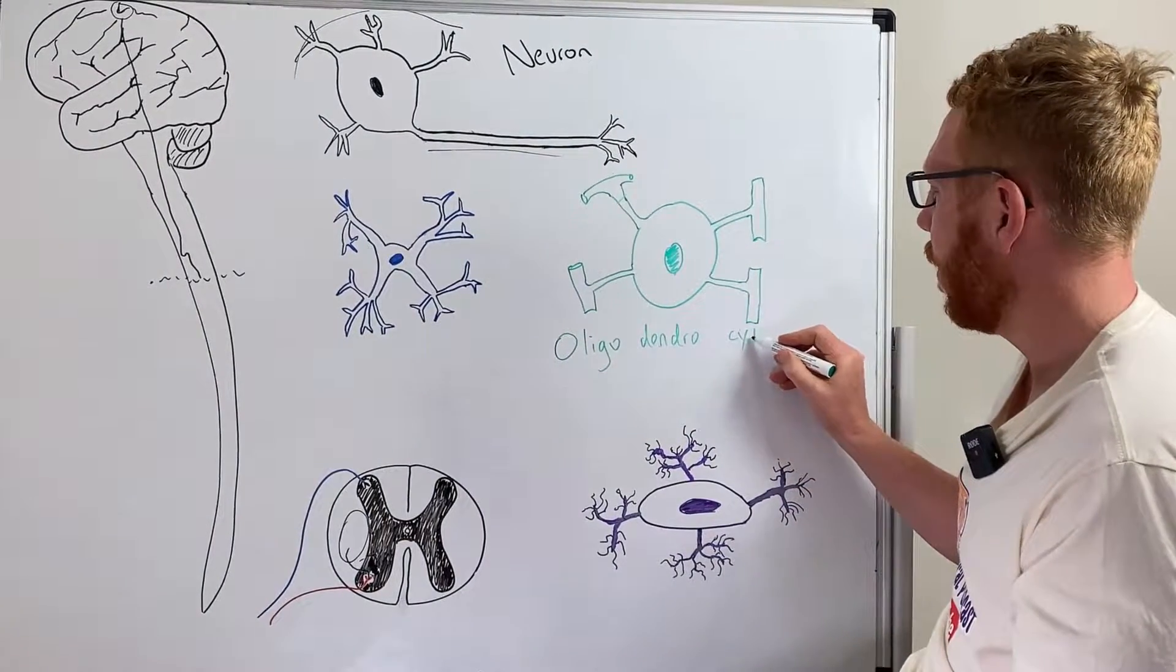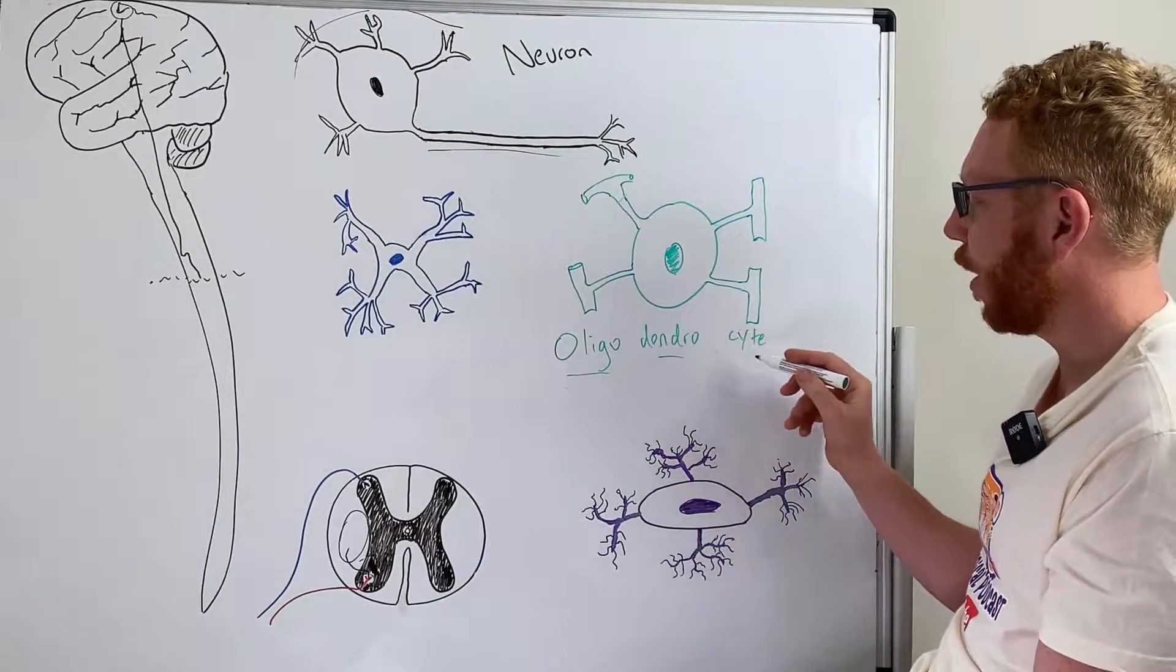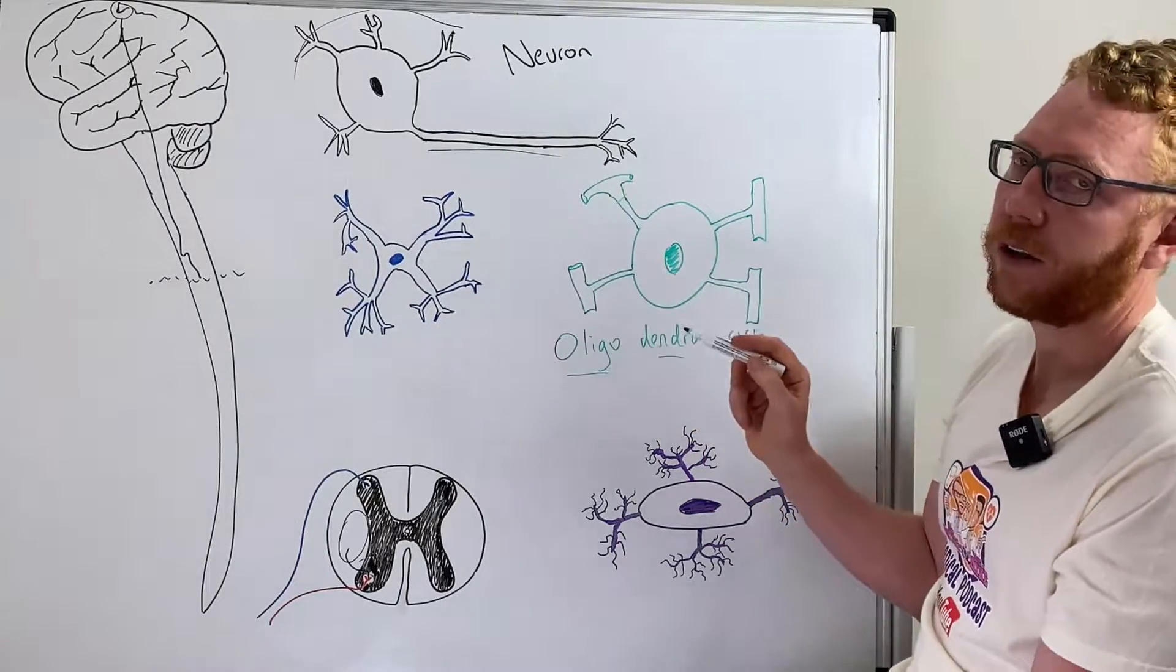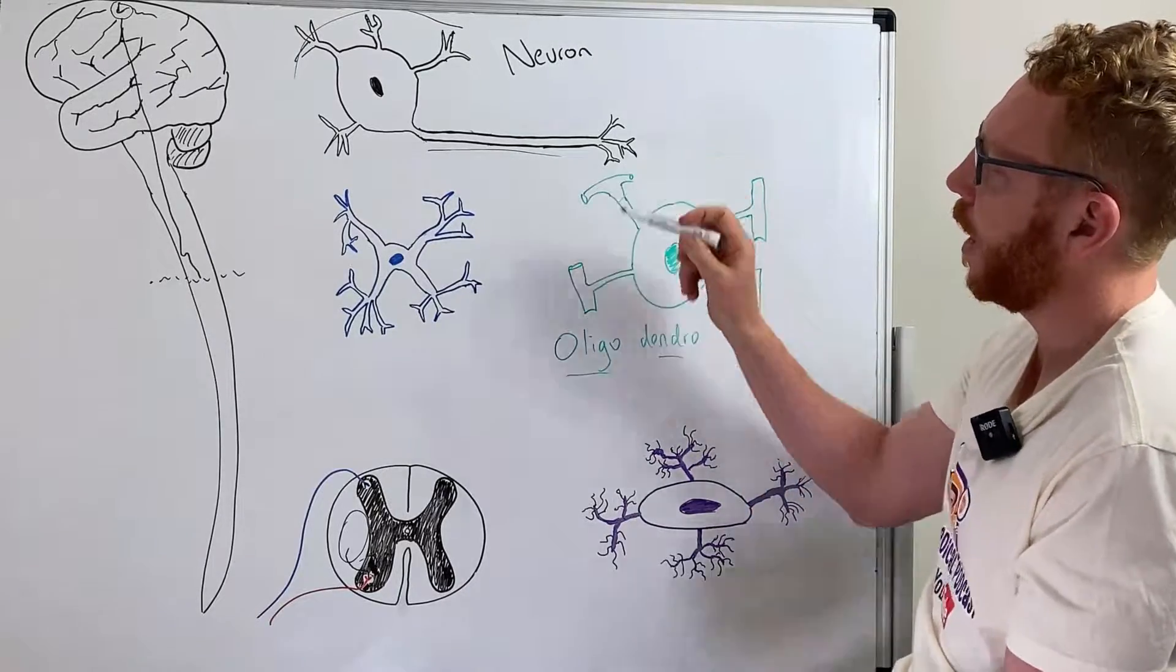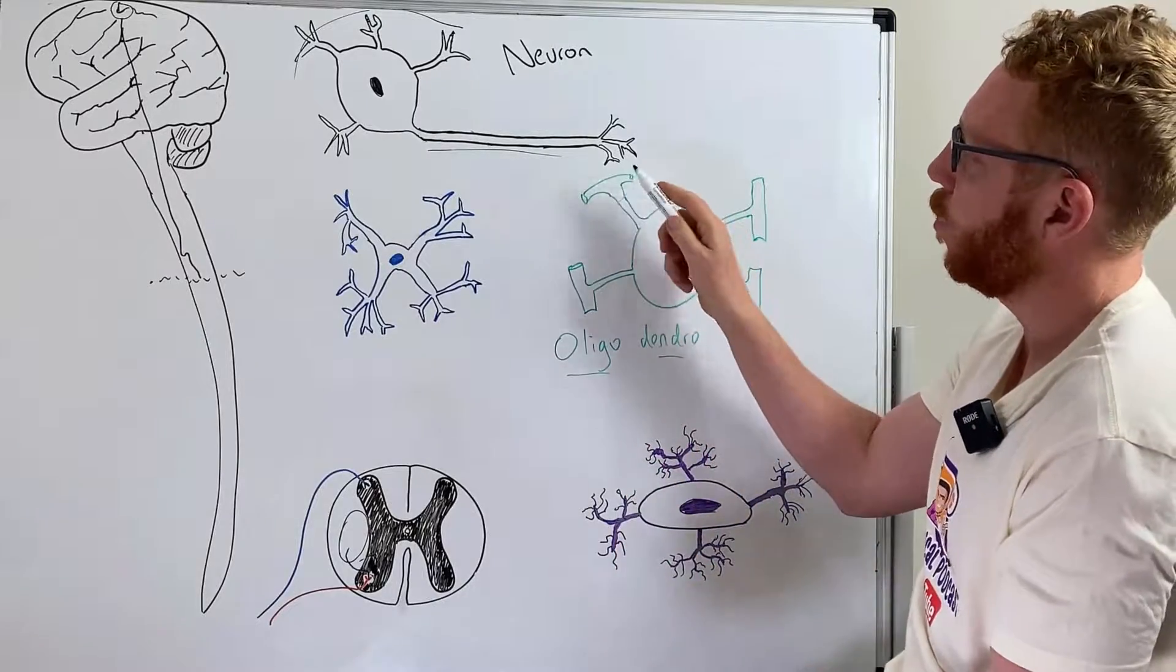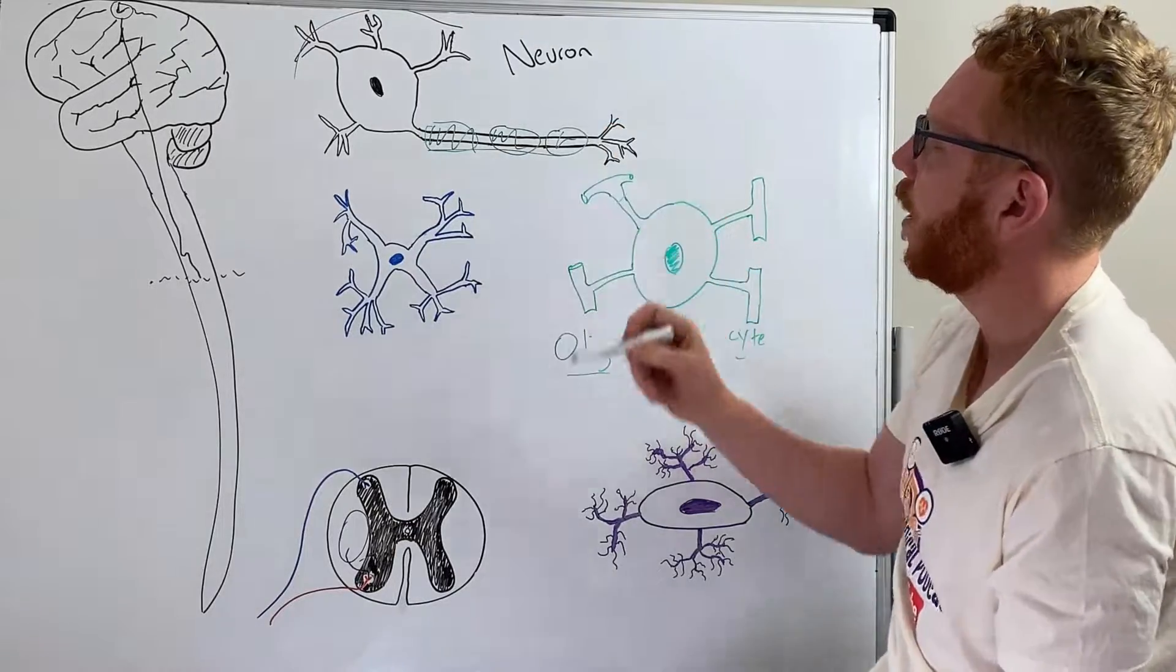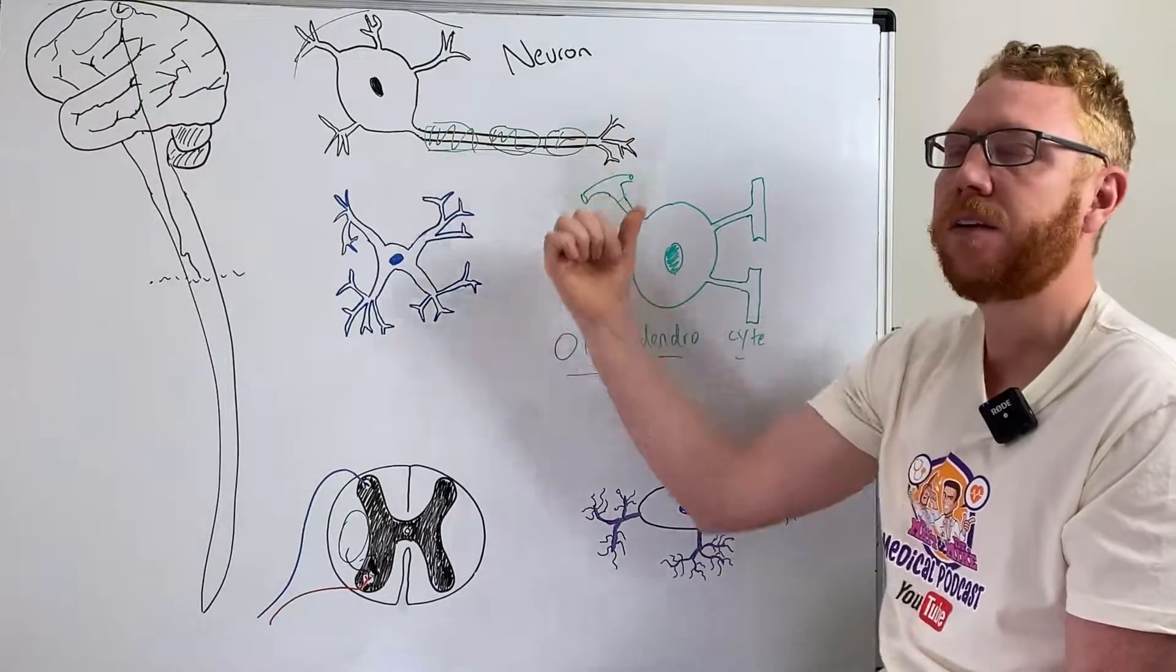Oligodendrocyte means oligo few, dendro branches, cyte cell. We can see the few branches here—that's why it's called oligodendro—and it's a cyte, meaning it's a cell here. These branches actually lock on to the axon of the neuron and wrap themselves around the axon. What that does is it insulates it, thus makes it white, therefore increases the speed.